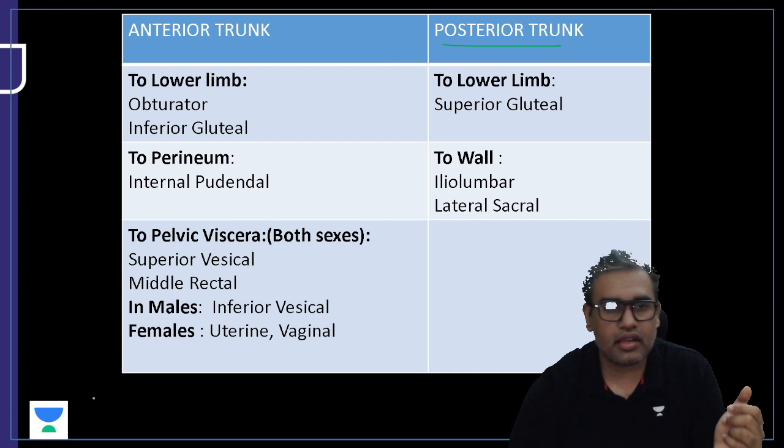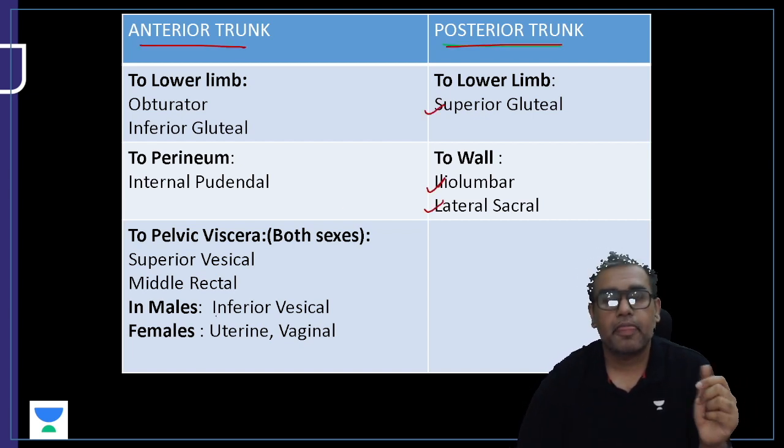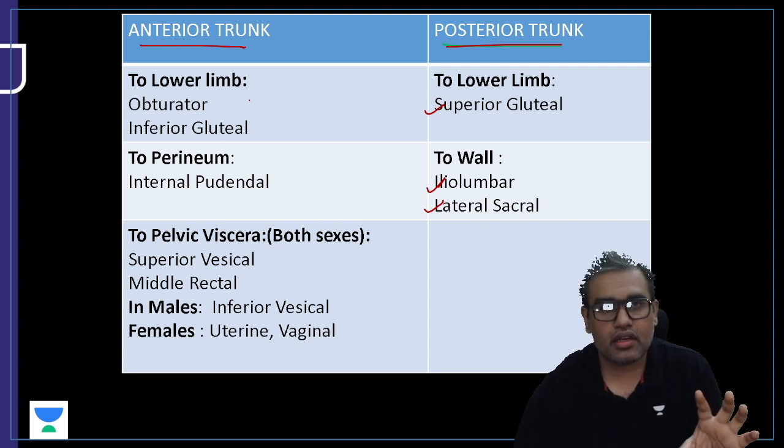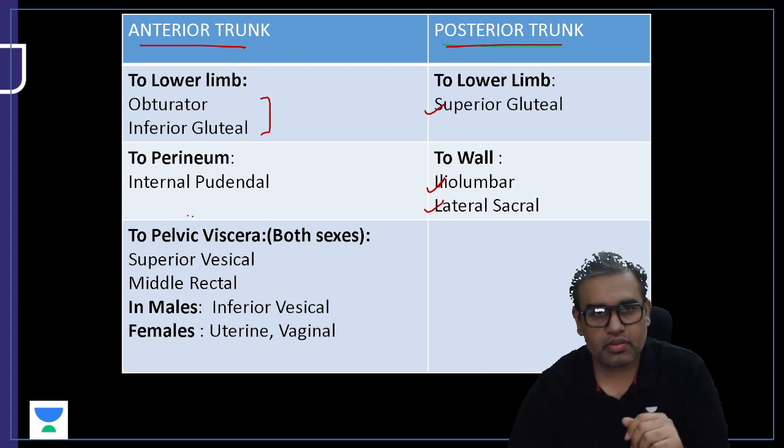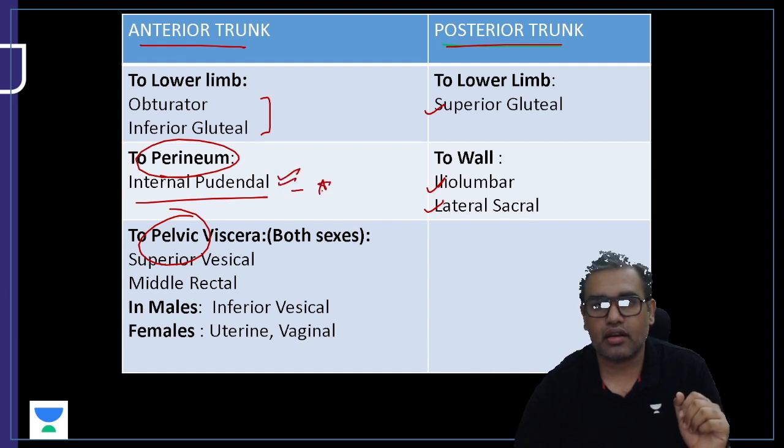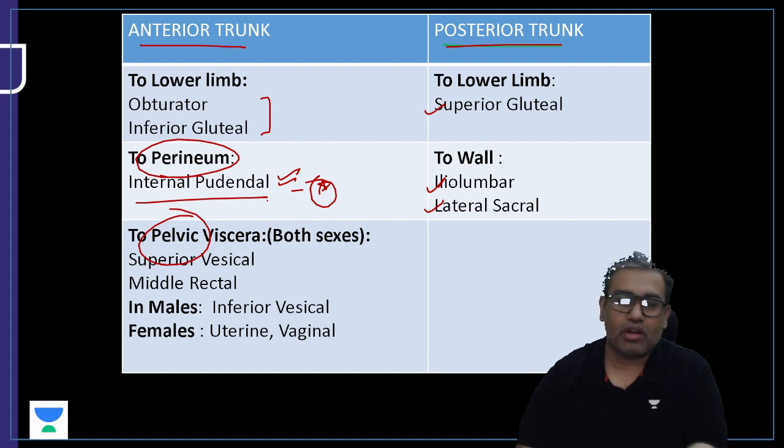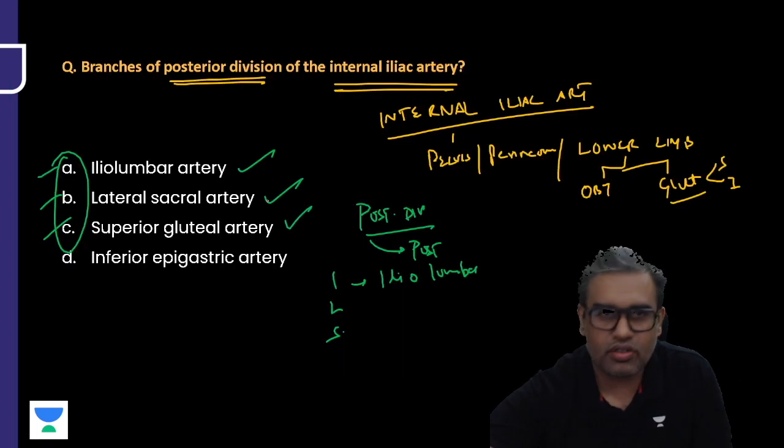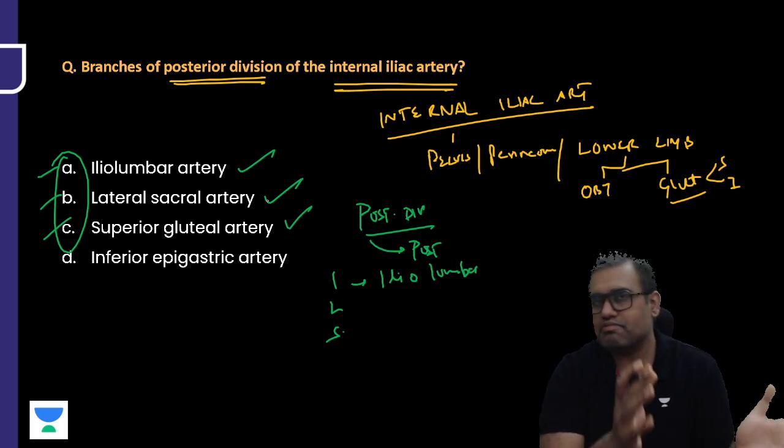This slide might help you with this. This is the posterior trunk and that is the anterior trunk. You can see the posterior trunk is ILS. Anterior trunk, if you see, gave branches to the lower limb which I already told you in the form of obturator and gluteal. The rest, most of the branches go to pelvis and perineum. Perineum is the internal pudendal artery which is an important artery. This way, by dividing the areas, we can have a good idea of what would be the branches.